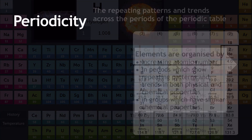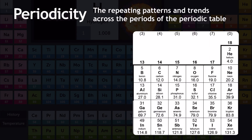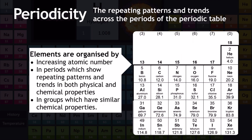Kicking off with a definition of periodicity: it is the repeating patterns and trends across the periods of the periodic table. The elements are organized by increasing atomic number. The periods, which are the rows, show repeating patterns and trends in both physical and chemical properties, whereas the columns, which we call groups, have elements with similar chemical properties.